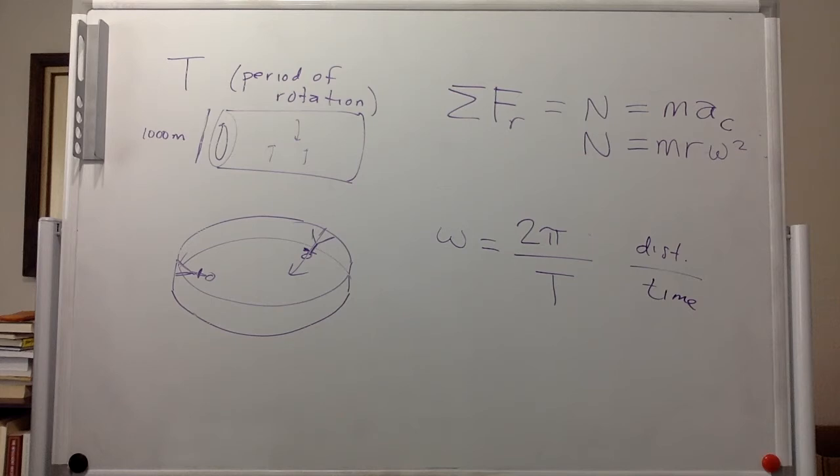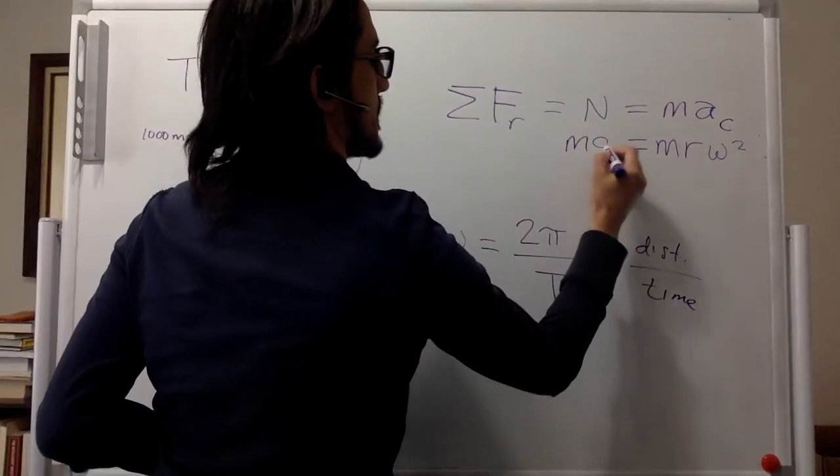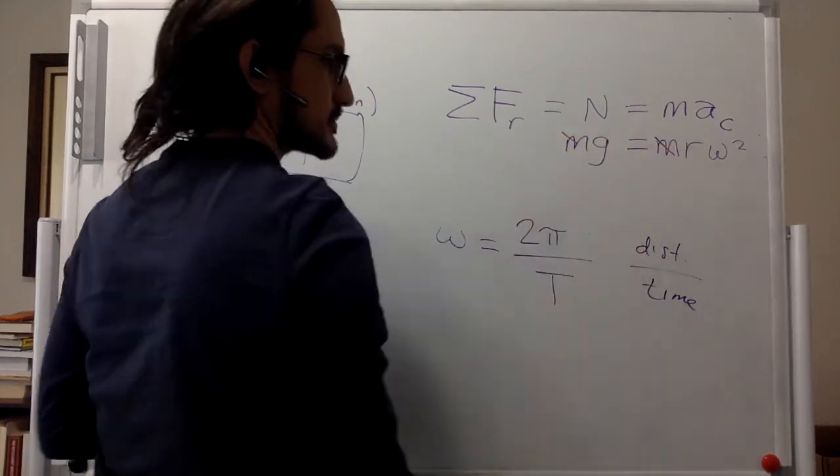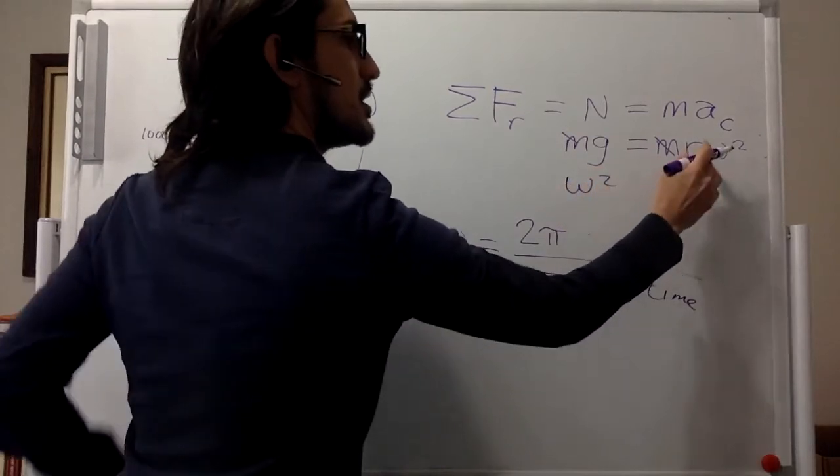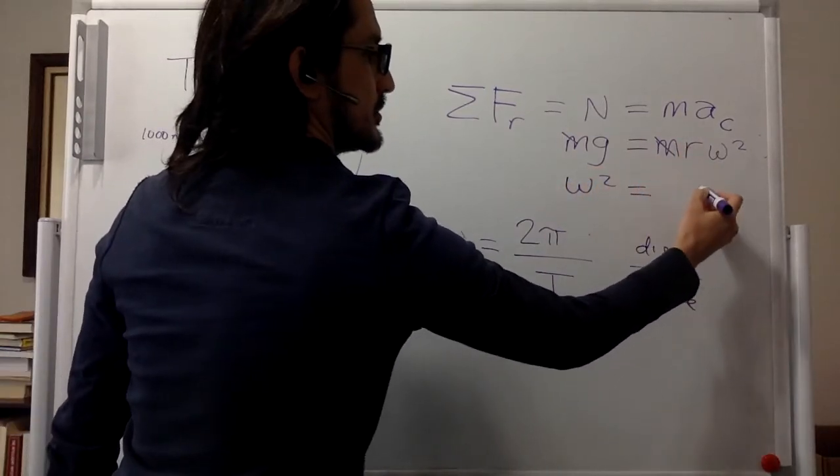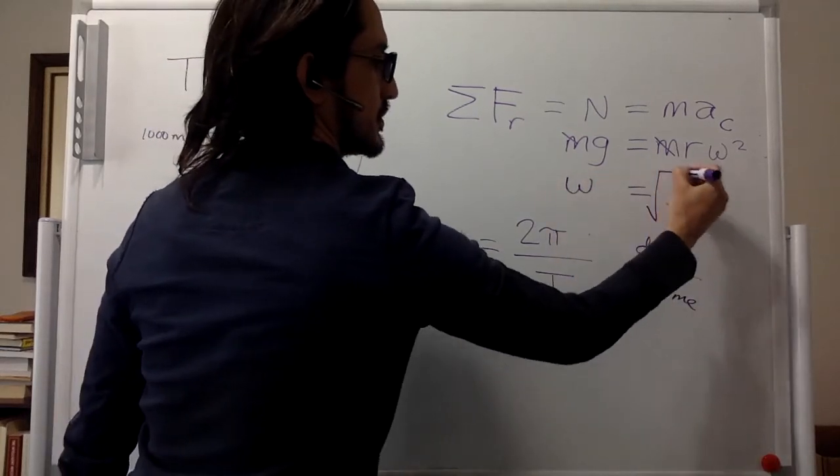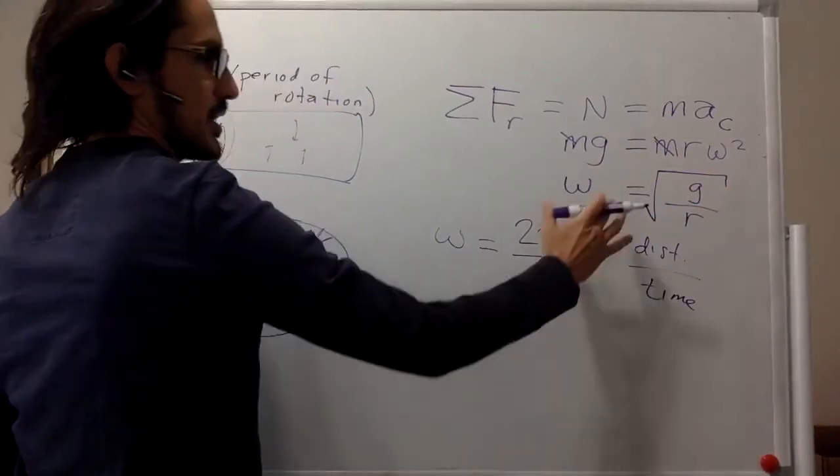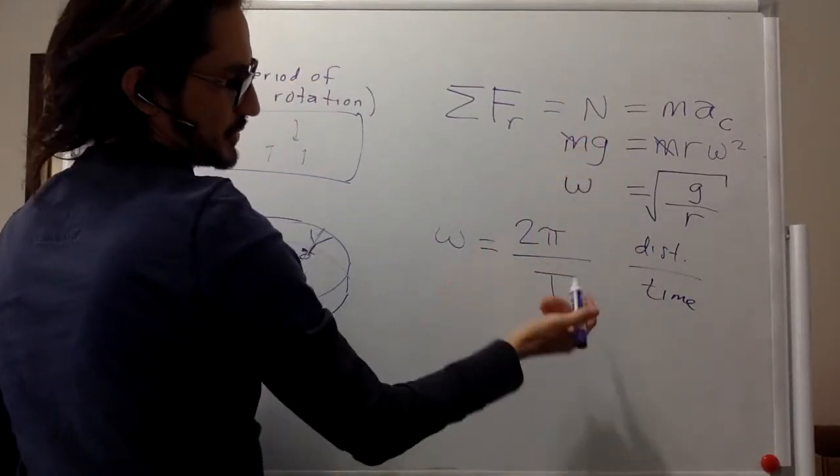So the normal force, we want it to be equal to the weight. And so now we can cancel the m's and we can get omega squared over here. Omega squared is g divided by r. And if we take the square root, omega is the square root of g divided by r. So we have omega from Newton's second law. And we have omega squared from the definition.